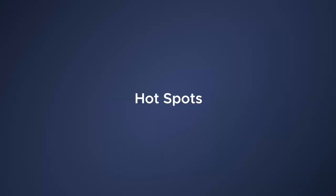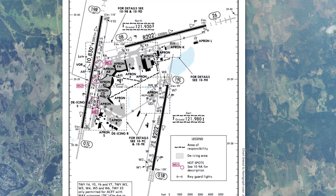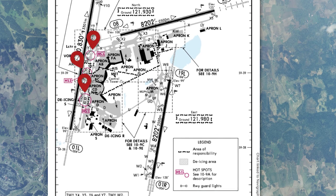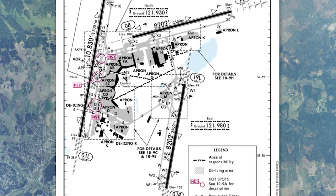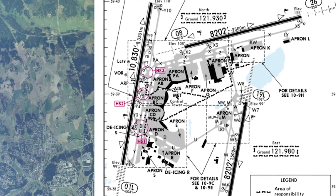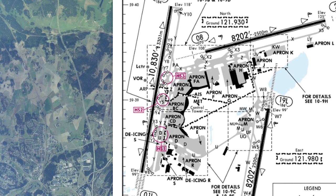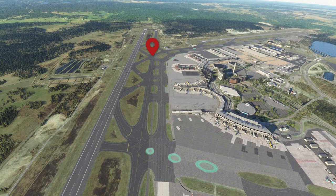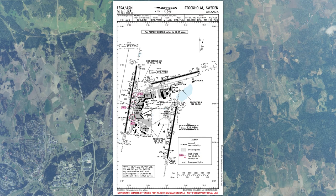Let's talk about another hot topic — hotspots. Hotspots are located on charts and they depict areas of very confusing spots where you could mistake a taxiway, get on a runway by mistake. It's really an alert for pilots to pay attention — these are hotspots, I've got to be careful and know exactly where I need to go to not penetrate a runway or turn down a different taxiway.